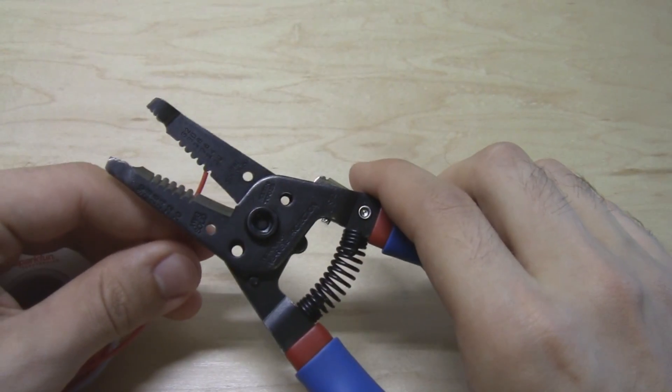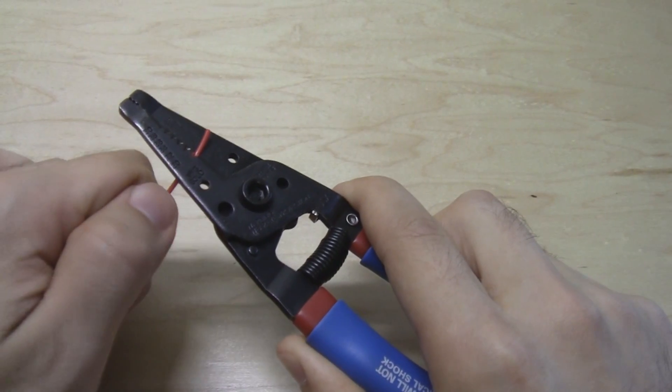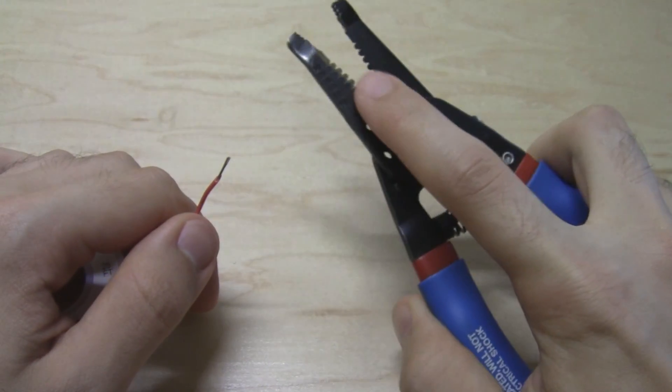So 22 stranded corresponds to the wire I have here. I open these up and all you have to do is feed the wire into the proper hole, close the wire strippers, give it a nice little tug, and the insulation should come right off.